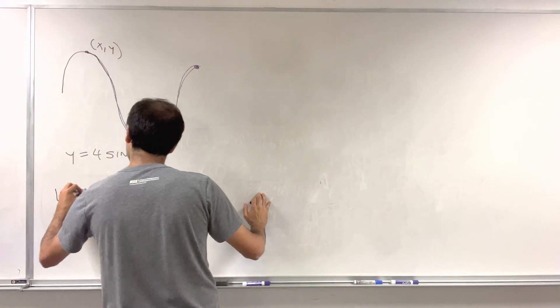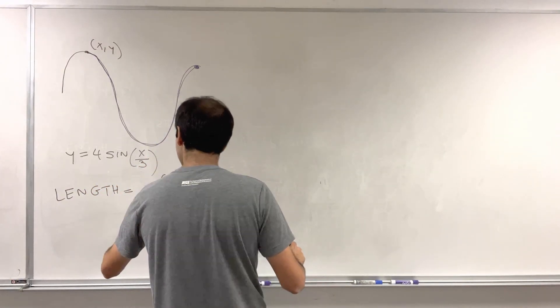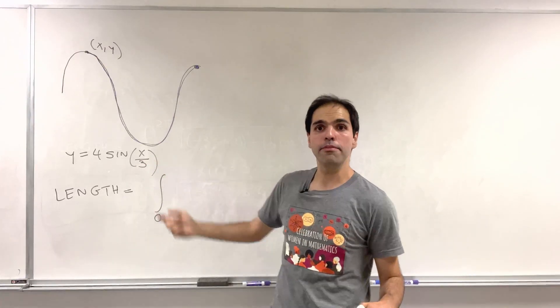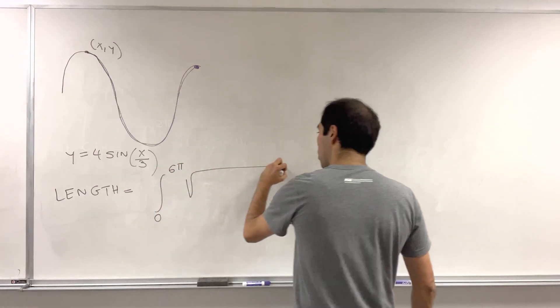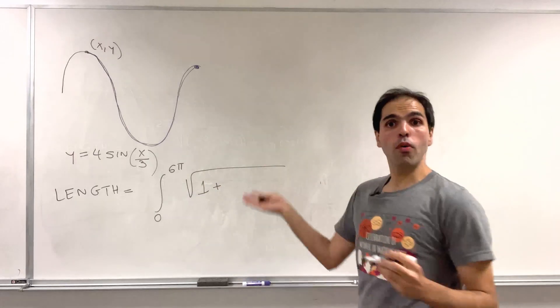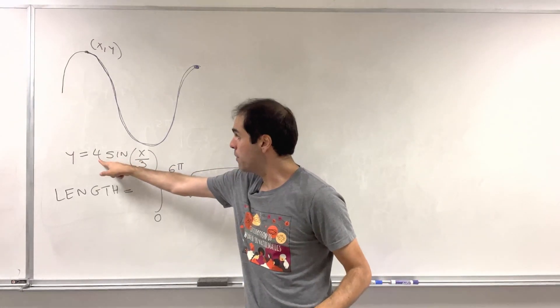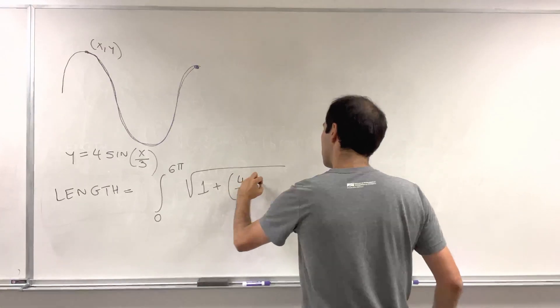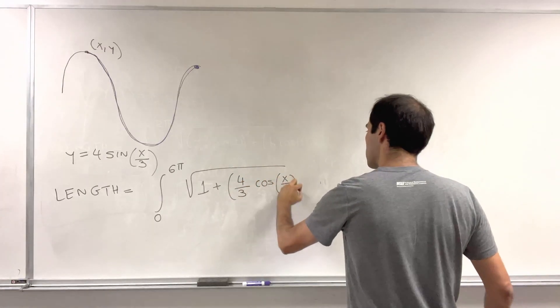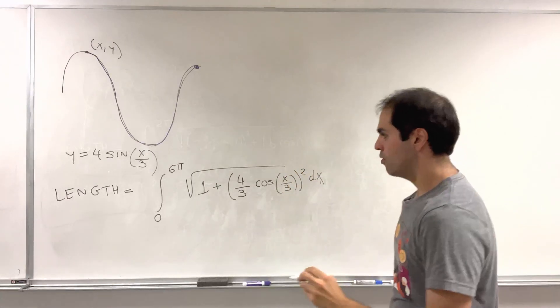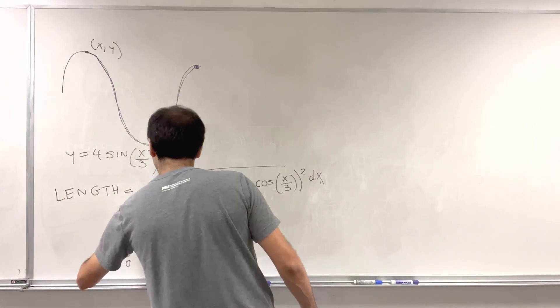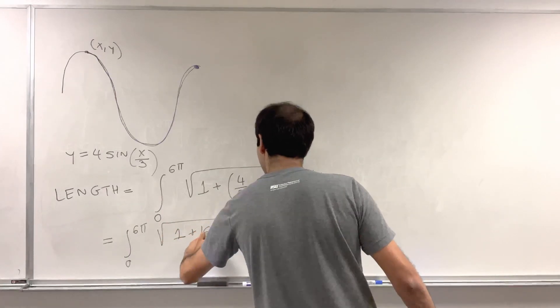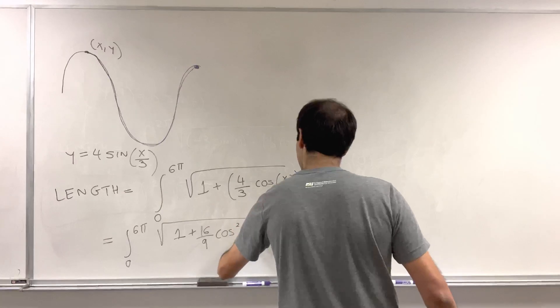which is simply that the length is equal to the integral from 0 to 1 period of the curve. So 3 times 2 pi, square root of 1 plus f prime squared. So f prime is 4 cosine of x over 3 times 1 third. So 4 thirds cosine of x over 3 squared dx. And this then becomes integral from 0 to 6 pi, square root of 1 plus 16 over 9 cosine squared x over 3 dx.